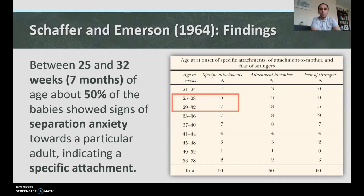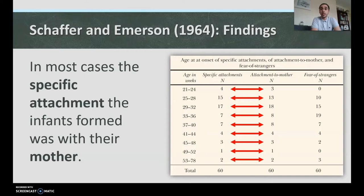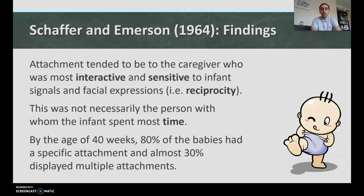In most cases, this specific attachment was formed with the mother. Attachment tended to be given to the caregiver who was most interactive and sensitive to infant signals and facial expressions — showing reciprocity. This was not necessarily the person with whom the infant spent most time. You need to actually interact with the child. By the age of 40 weeks, 80% of the babies had a specific attachment, and almost 30% displayed multiple attachments.